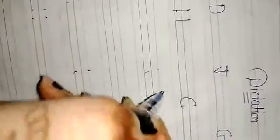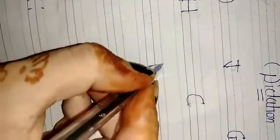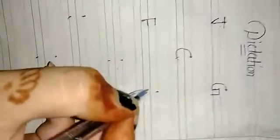Write here J jug. Next write G grapes. Next write C cat. Next write F fish. Next write B ball.